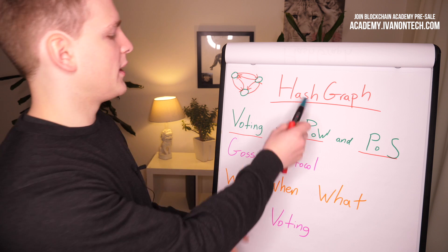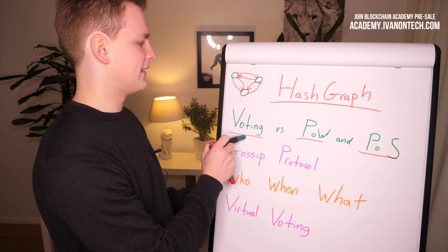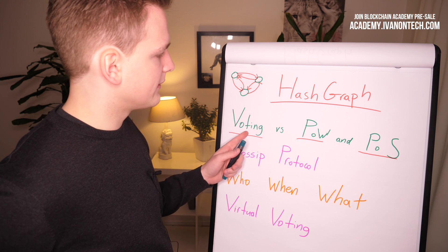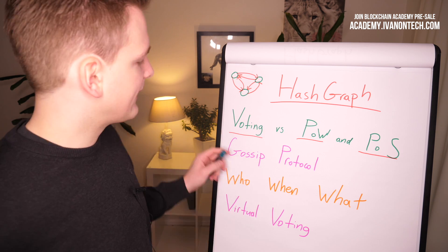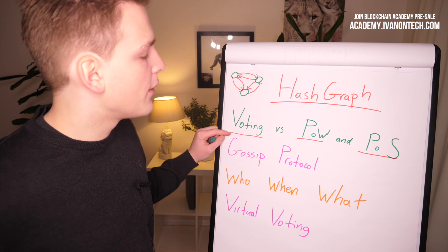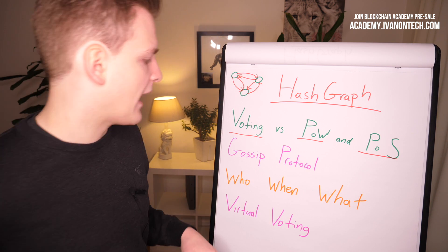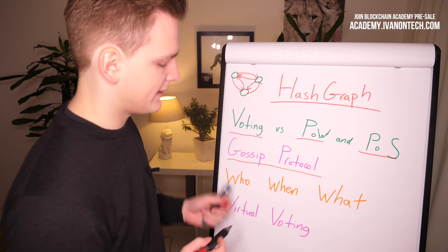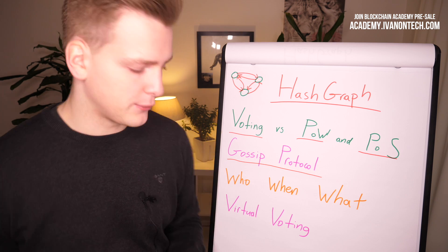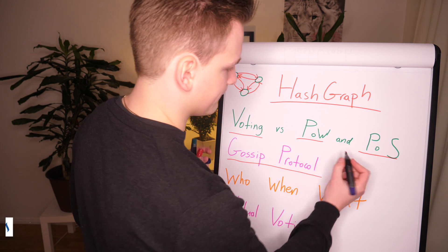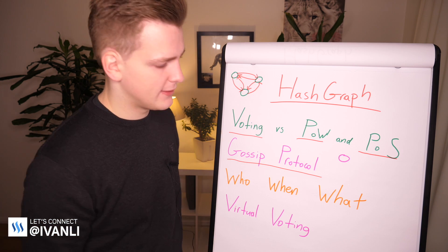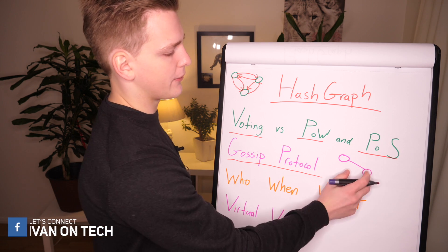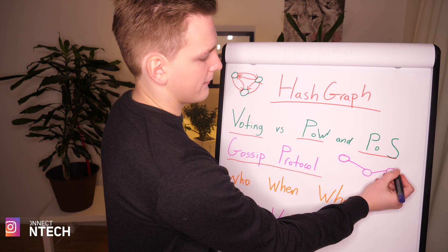Hashgraph really wants to be a voting algorithm because they see the potential advantages of voting. So they try to build the Hashgraph data structure in such a way that it has all the advantages of voting algorithms without the bandwidth disadvantage. They developed something called a gossip protocol: if I am a node and I get some information, I will randomly pick another node and tell them everything I know, then that node picks another node and tells them everything they know.